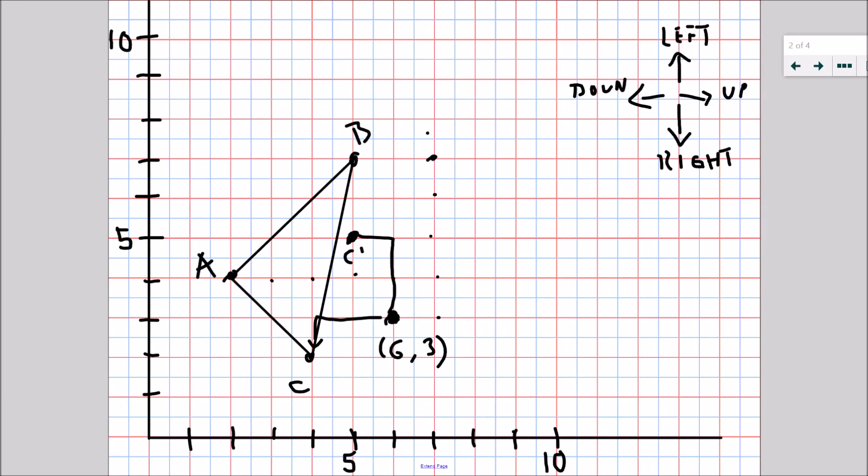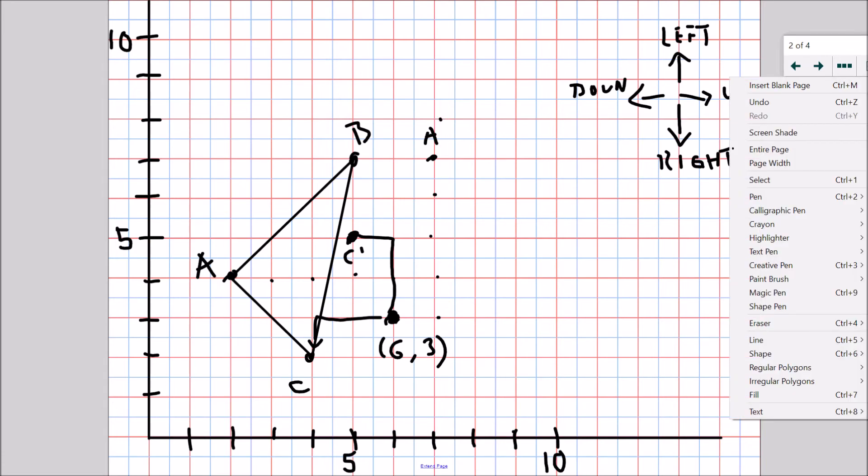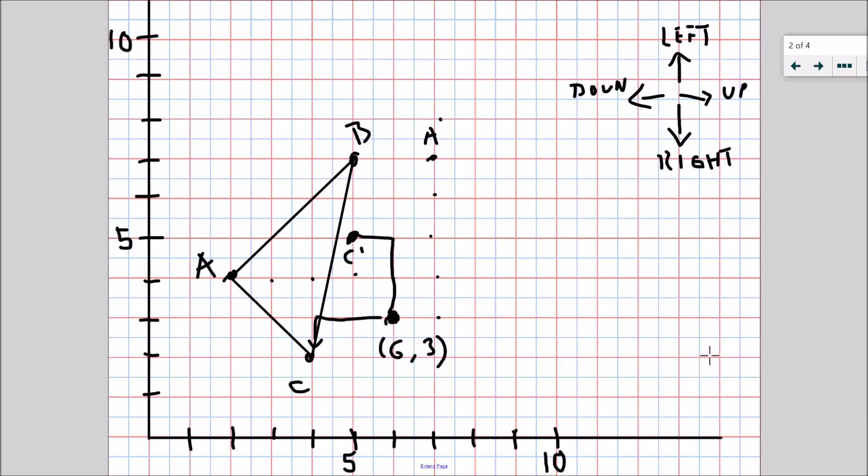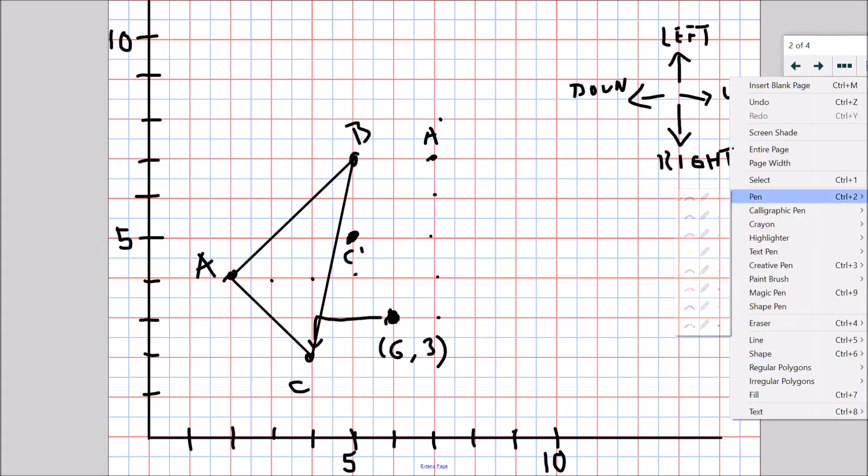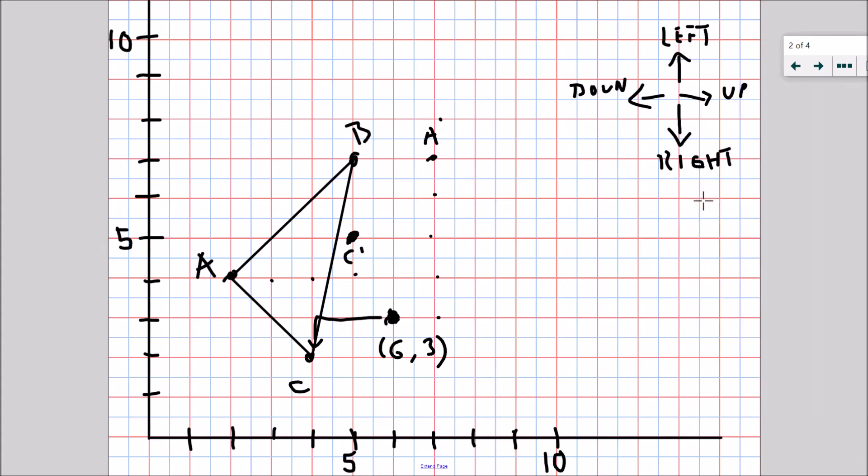I've got A prime over here. I'm going to quickly erase this line that I drew so that it's a little bit clearer to see for us. So I've got my new C and my new A. All I need now is my new B. B is one, two, three, four up and one left.